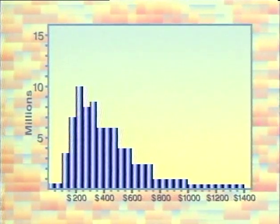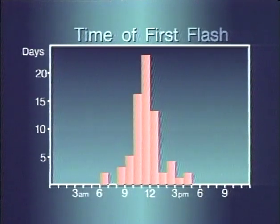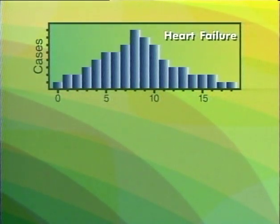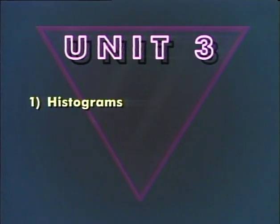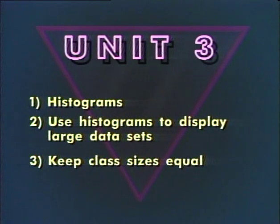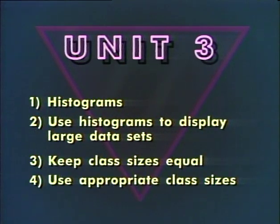Another thing to look for in the overall pattern of a histogram is spread. Some distributions, like the lightning data on first flashes, are tightly clustered, while other data — such as the number of days that heart disease patients spend in the hospital — are much more spread out. In this unit, we've learned about histograms: one way to picture data so we can more quickly and easily understand them. We saw that histograms are useful when we have large sets of data that we can break into classes, and we need to keep the class sizes equal and use class sizes that give us the most informative picture possible.